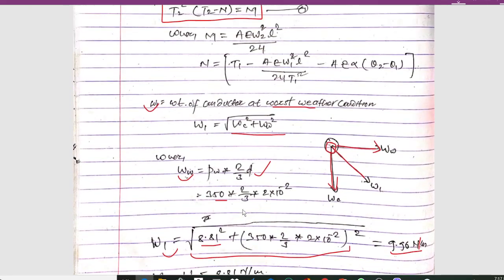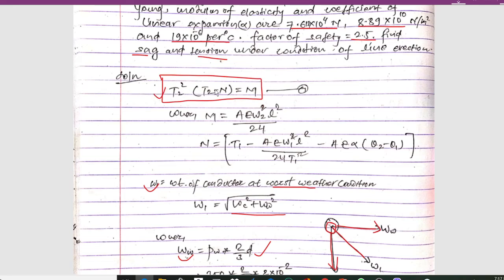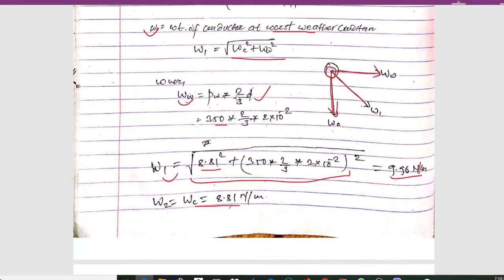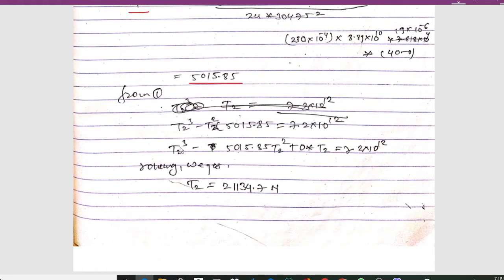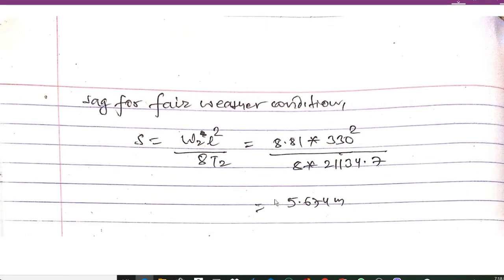Now using the relation t2² × (t2 − n) = m and substituting the known values of m and n into this equation, we get a cubic equation in t2. Solving this cubic equation using a calculator gives t2 = 21,134.7 Newton.